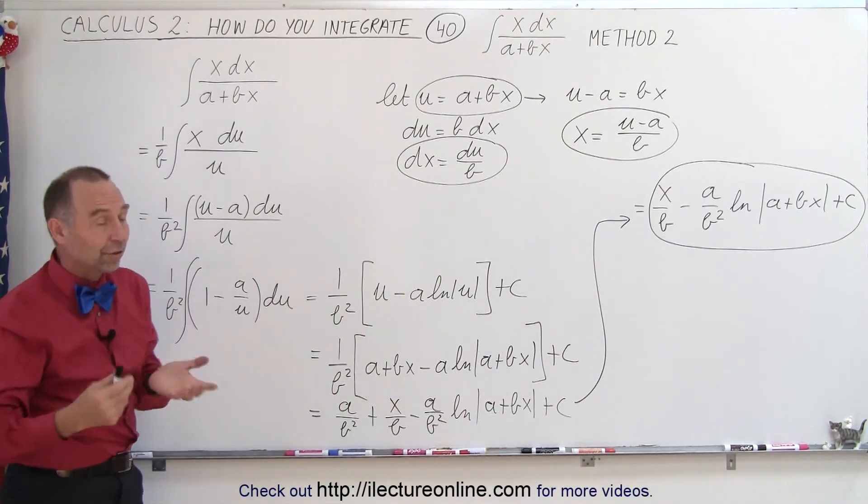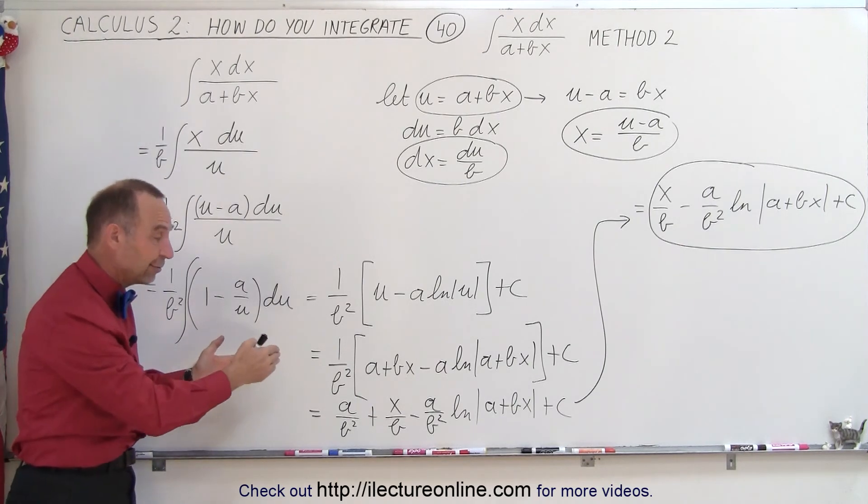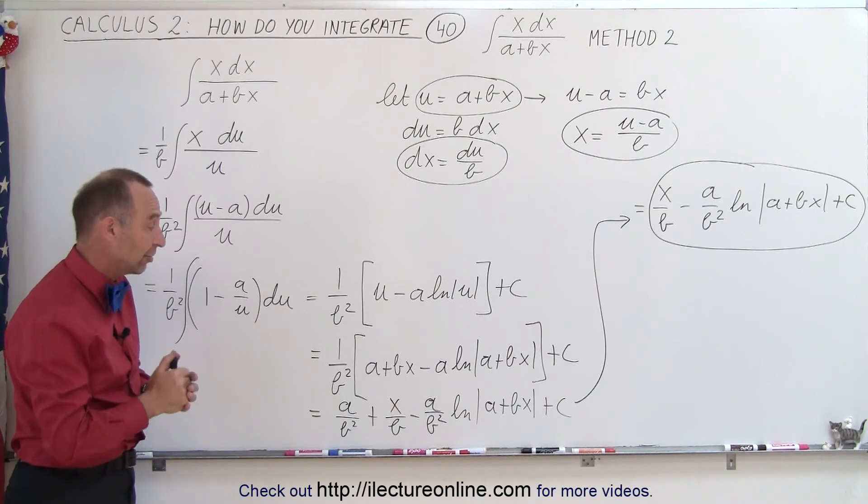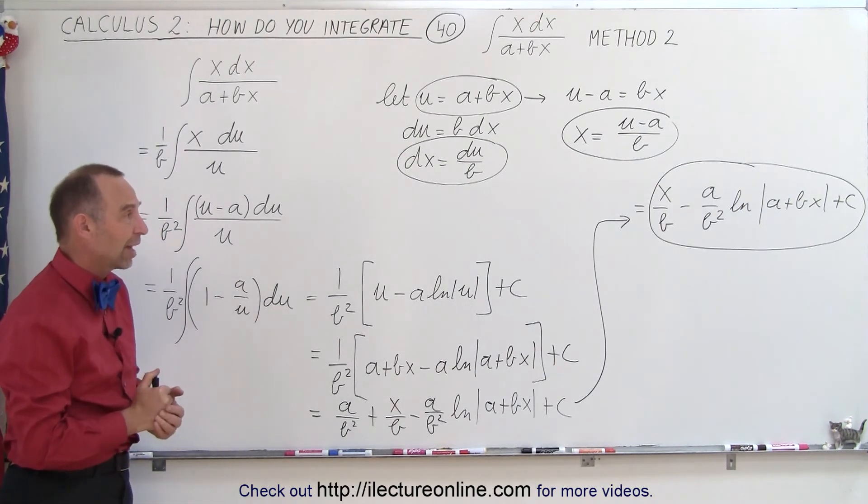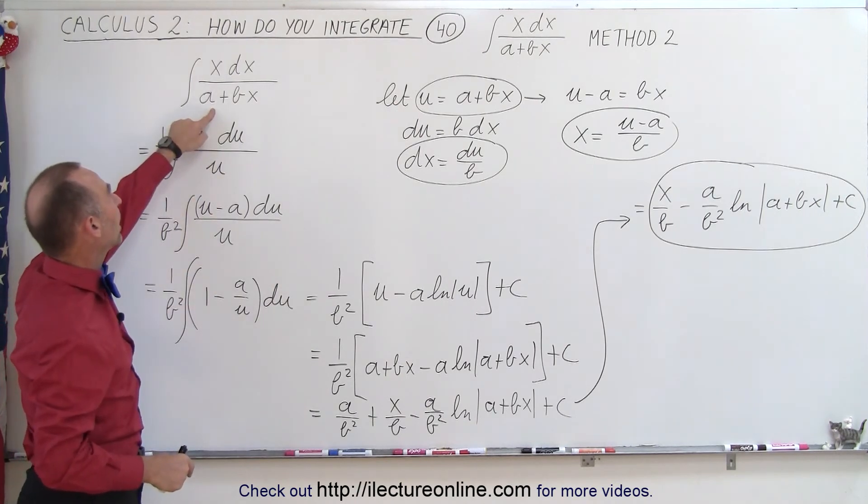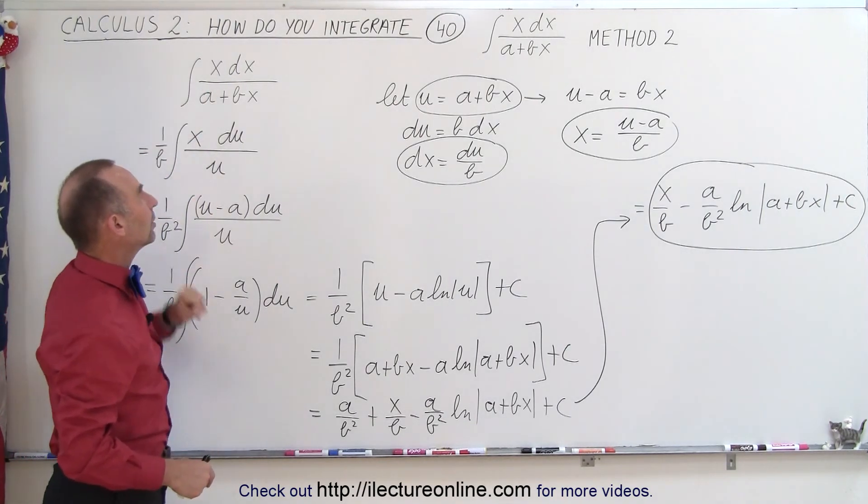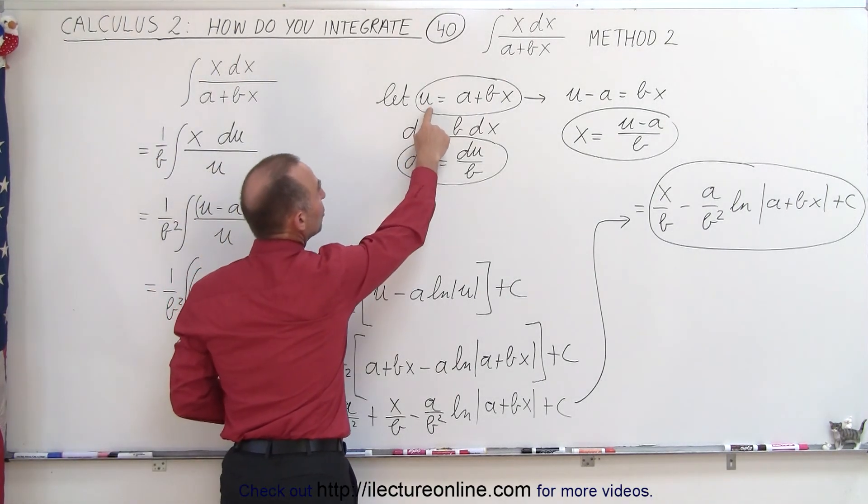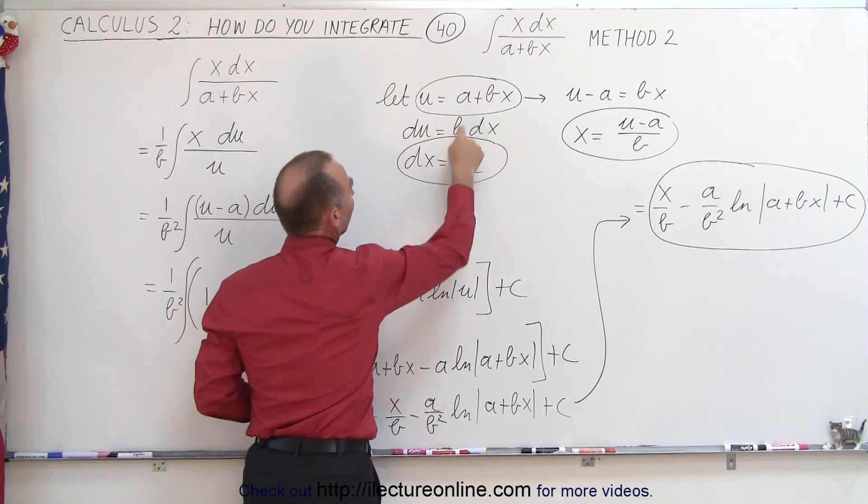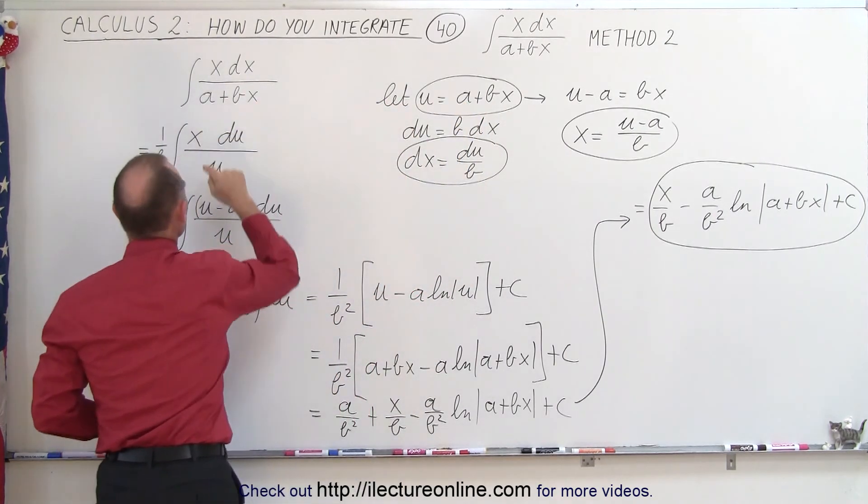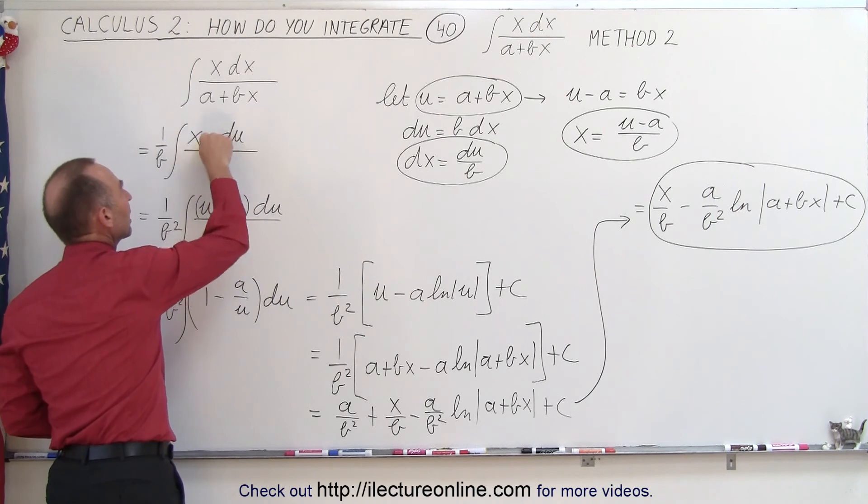Sometimes you'll see when you use different techniques you get slightly different forms of the same answer and you may think oh it's not the same answer, but it actually is and you can make one look exactly like the other. So remember what we did in the previous video we simply took the denominator and divided it into the numerator. In this technique we use the substitution technique u equals a plus bx and then dx is equal to du over b. When we substitute those into the equation we still end up with an x. To get rid of that x we then take this equation solve it for x and substitute this back in the integral right here.